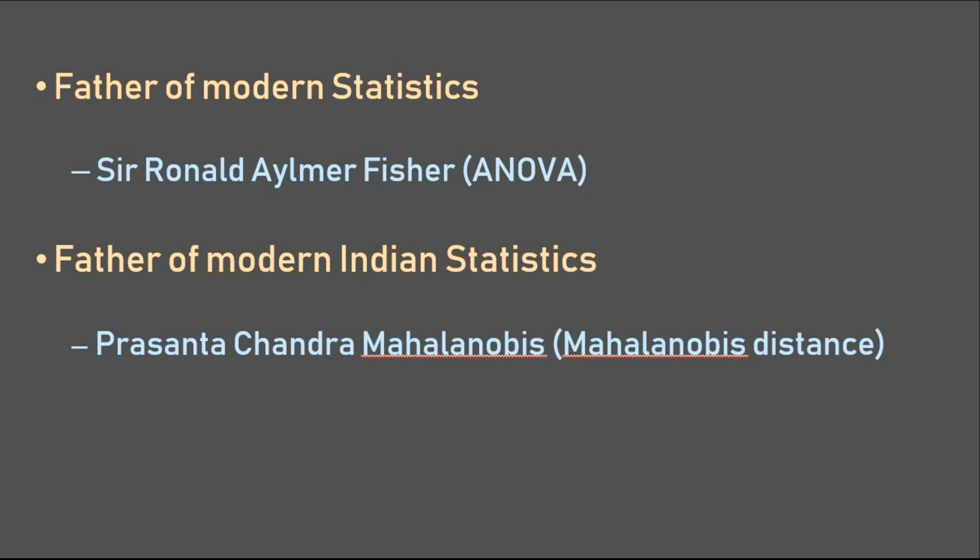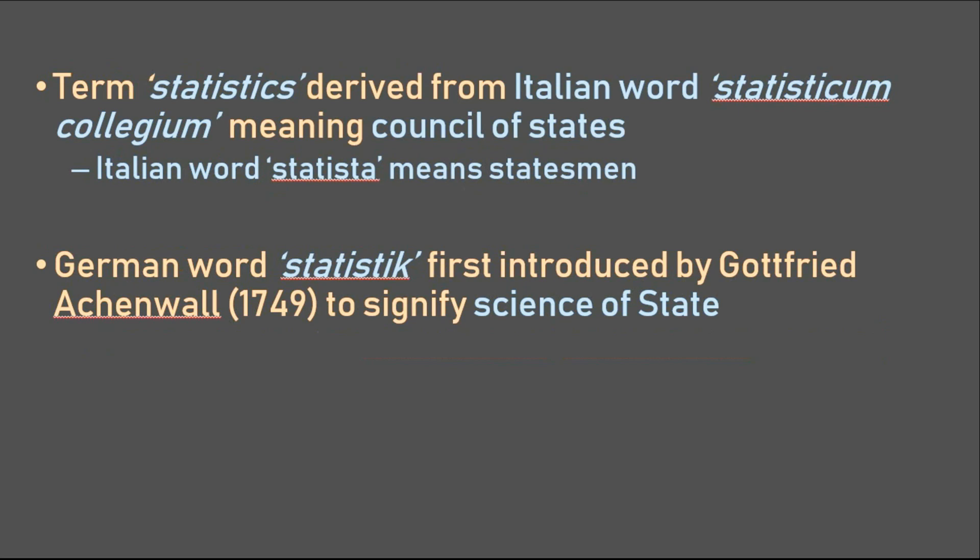We have seen that statistics as a science was used mostly in the affairs of the state. Therefore, it is no surprise that the term statistics was derived from the Italian word statisticum collegium, meaning council of states. The Italian word statista means statesman. The German word statistik was introduced by Gottfried Achenwall to discuss the science of state.